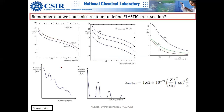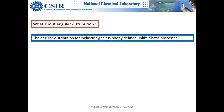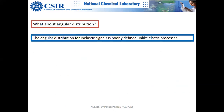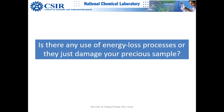What about the angular distribution? In the previous lecture we could plot the scattering cross-section for elastic processes using a beautiful equation — that was for a single atom, and with the structure factor for a collection of atoms. Unfortunately for inelastic processes it is very disappointing: inelastic processes are highly complex and poorly understood. We don't have simple equations for them.